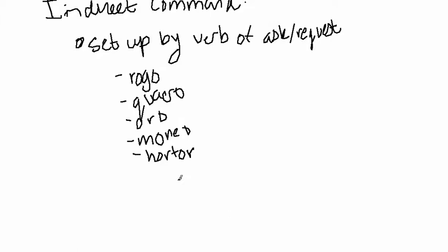But the actual command itself, or in the case of the example I just gave you, what they told him, is set up either by an ut if it's a positive word, or by a ne if it's negative, or if you're being told not to do something.